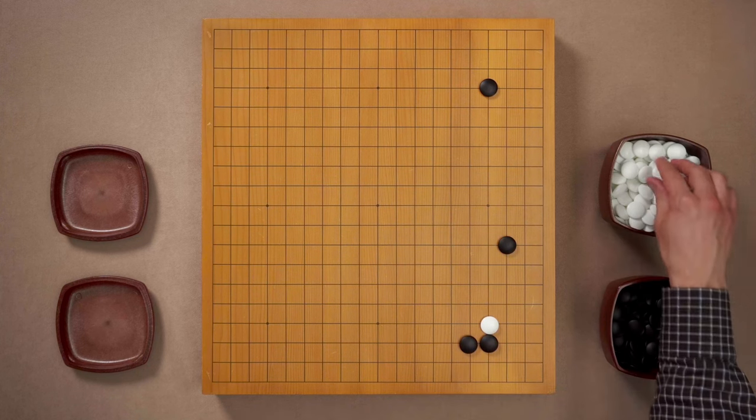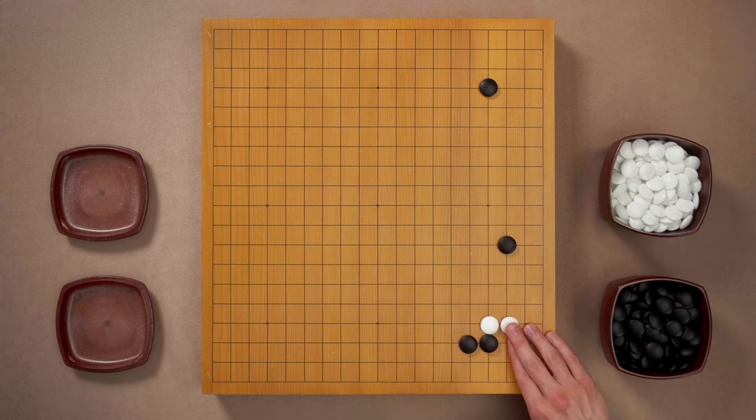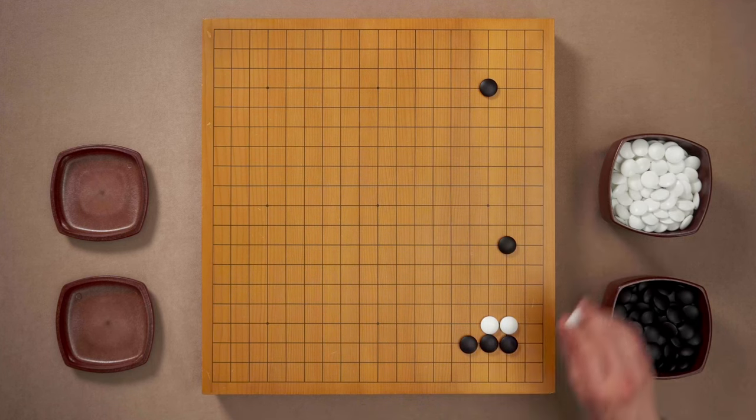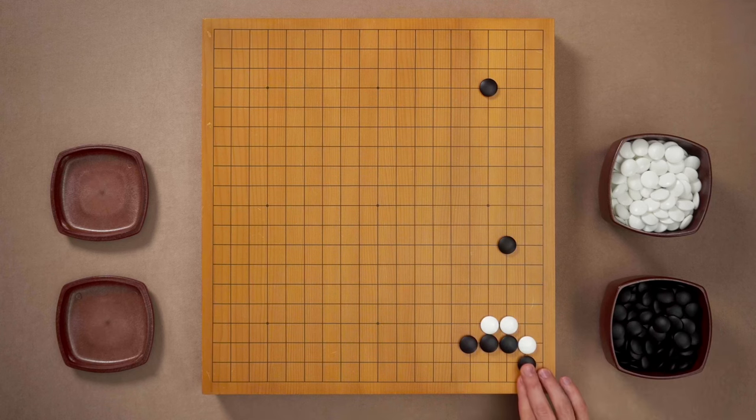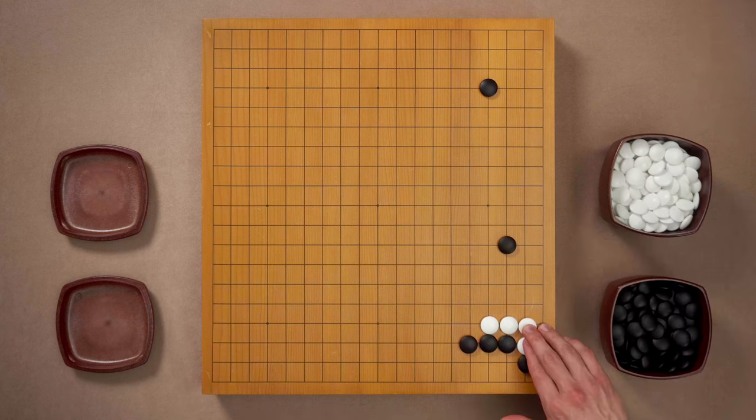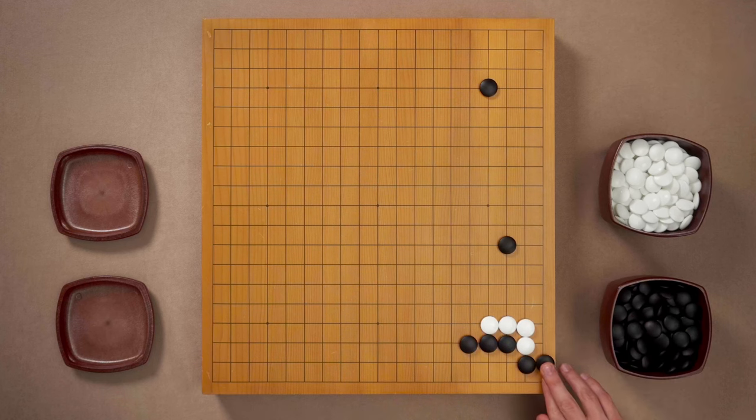Black can extend and now white's job is to create a group on the side. White tries to go into the corner. Black blocks white from doing it. And how do you think white should continue? White could connect solidly. Then black would take the corner and it's not bad for white. However, white could do better.